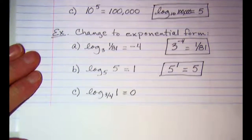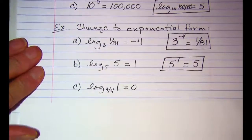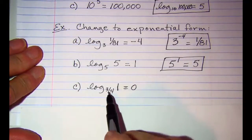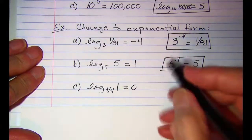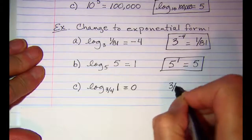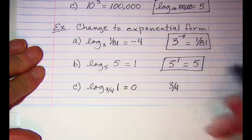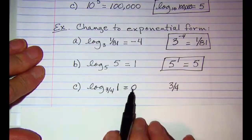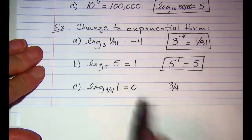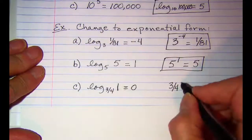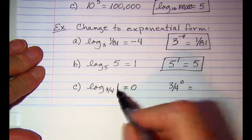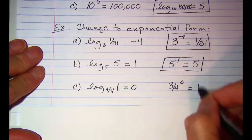And then our last example. We have the base of the logarithm as three-fourths. A log is an exponent, so zero is my exponent. And that's equal to 1.